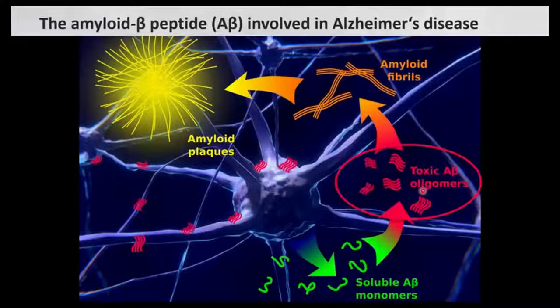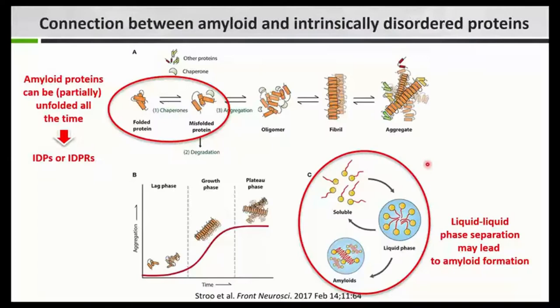In my group, we use molecular simulations, in particular molecular dynamic simulations, with the aim to understand the oligomer formation of the amyloid beta peptide. Quite often, these peptides or proteins which aggregate and lead to neurodegenerative diseases are also called intrinsically disordered proteins, or IDPs, and sometimes only intrinsically disordered protein regions, IDPRs.